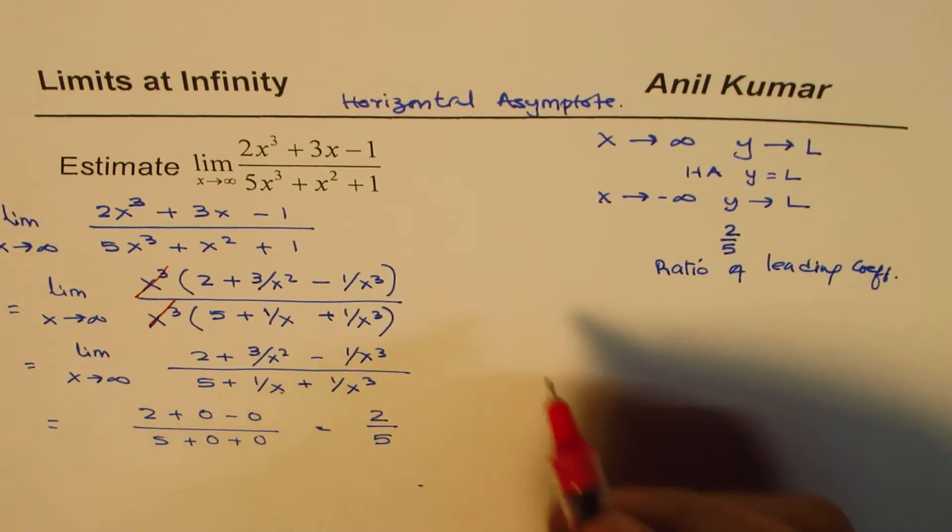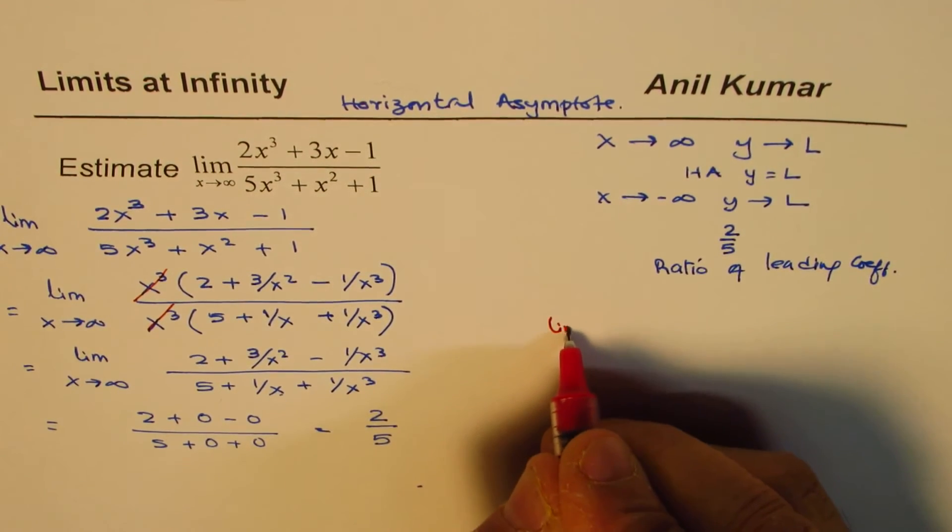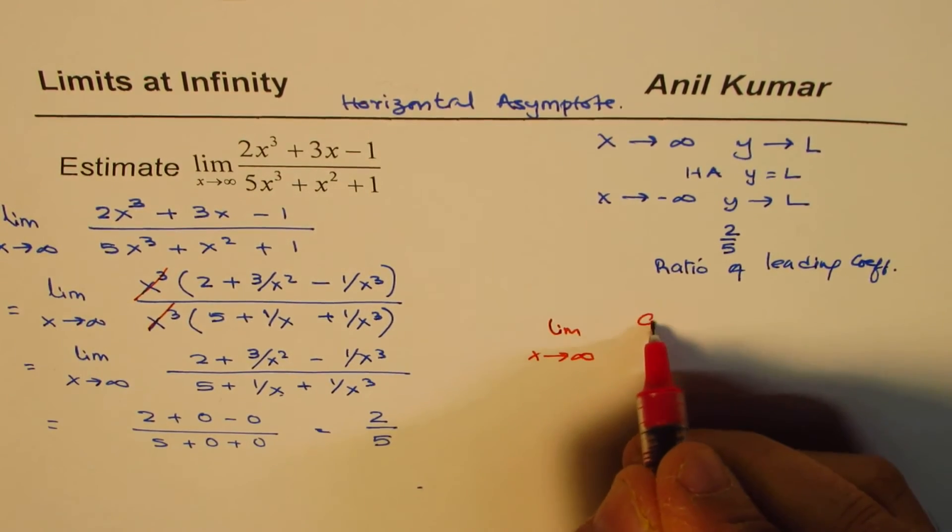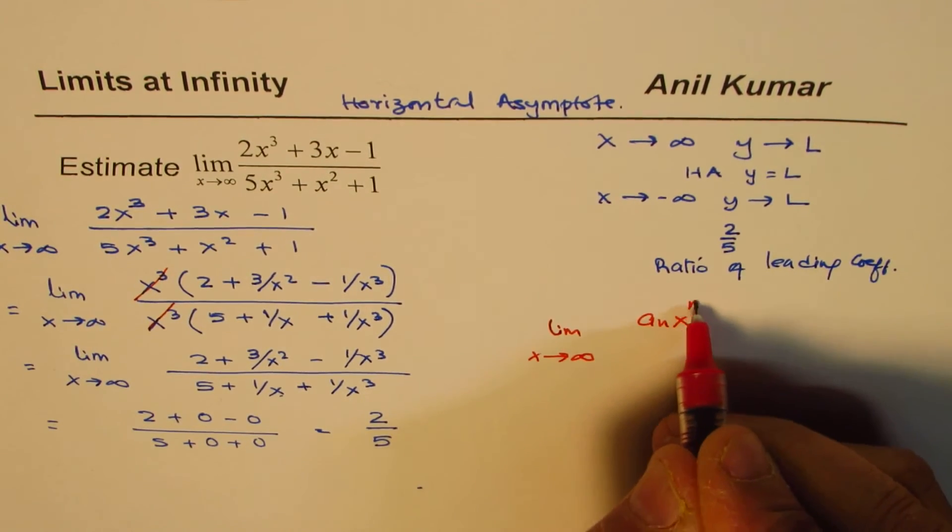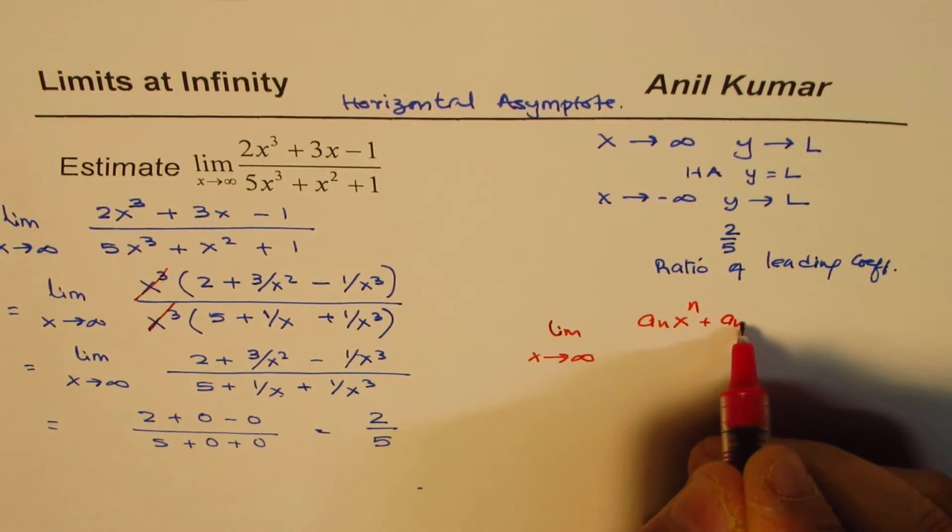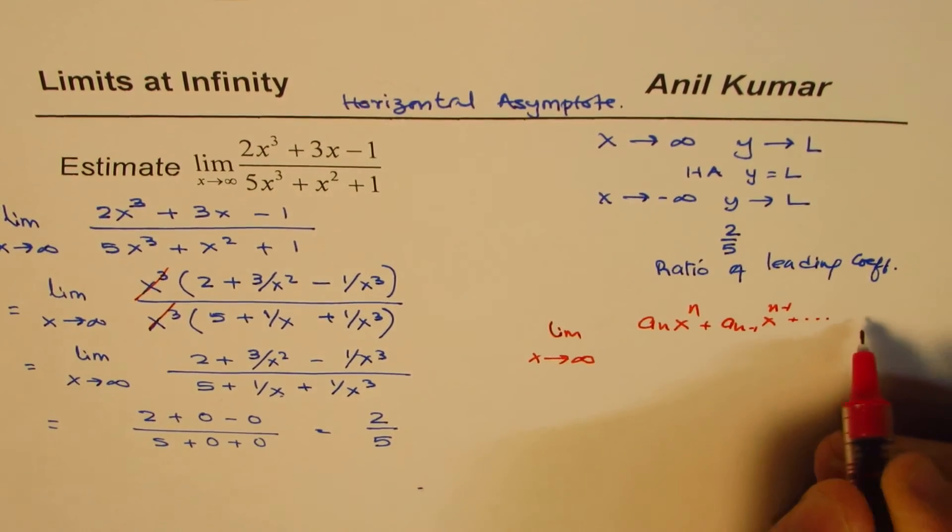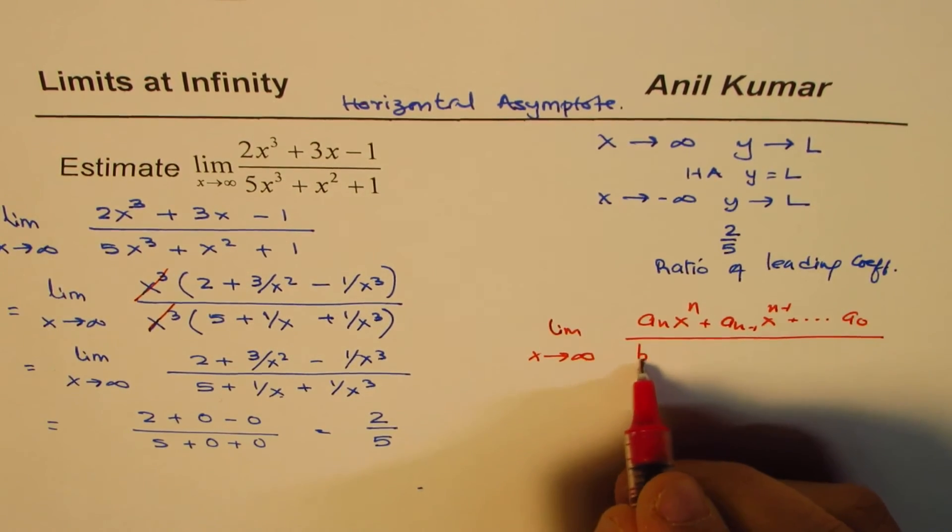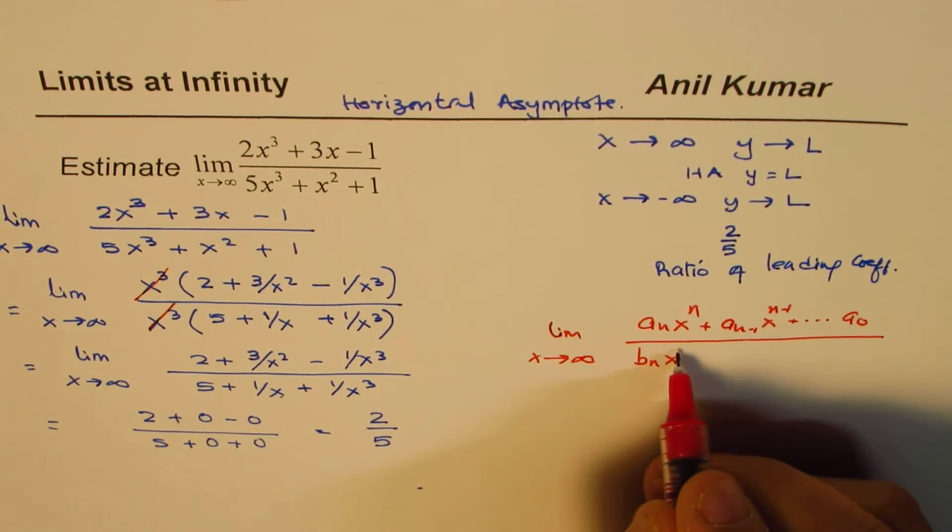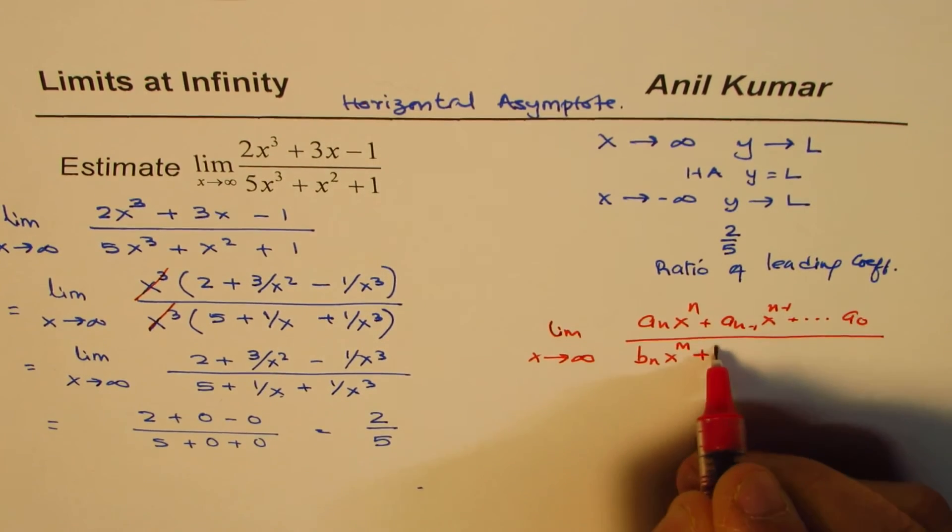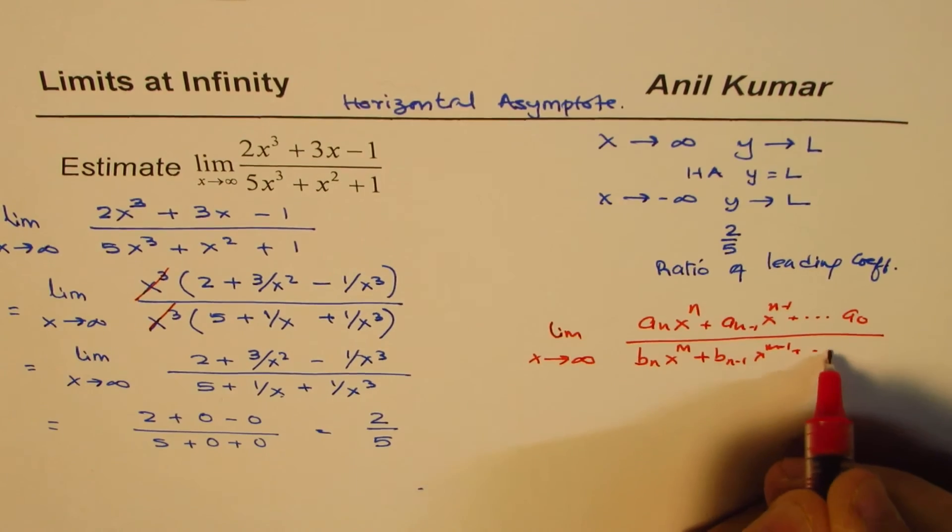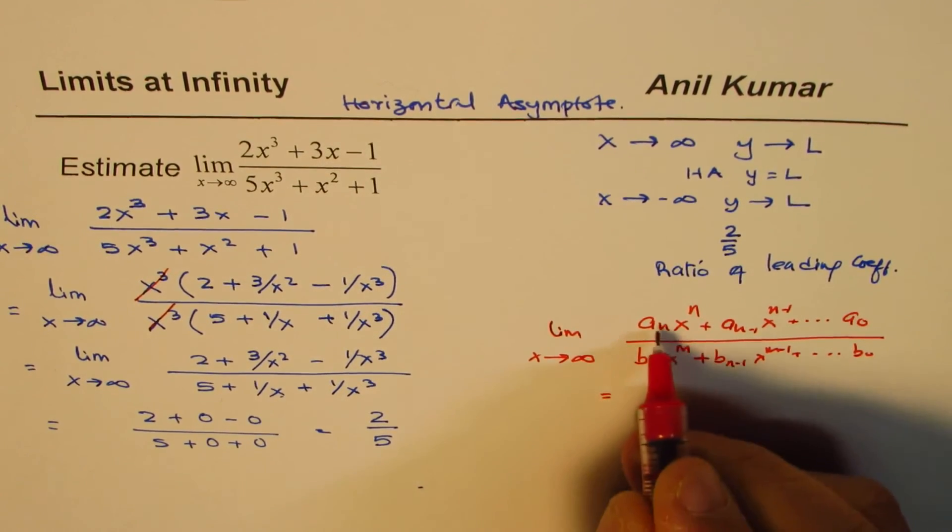So in general, if you have a question which is limit x approaches infinity, and let's say if you have aₙxⁿ + aₙ₋₁xⁿ⁻¹ and so on till a₀, divided by bₘxᵐ + bₘ₋₁xᵐ⁻¹ plus so on till b₀, then the answer will be aₙ/bₙ. Remember that.